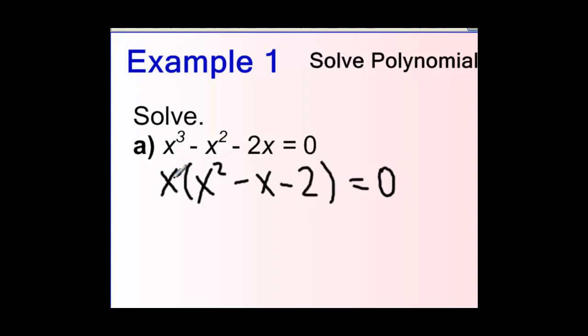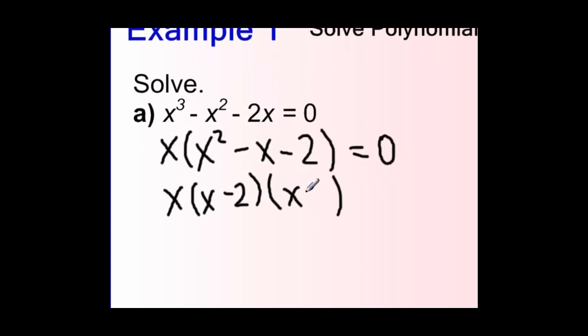If I pull out a factor of x, I'm left with x squared minus x minus 2. And then I should be able to recognize that I could then continue to factor this quadratic using simple trinomial factoring. I'm looking for two numbers that multiply to negative 2 and add to negative 1, and I think those two numbers are negative 2 and positive 1.